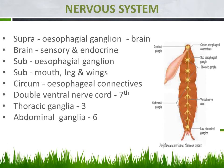Let us see the first system: the nervous system. The nervous system is controlling or coordinating the body functions. In our nervous system we have the brain, followed by the spinal cord. From the spinal cord, the nerves arise and are supplied throughout the body. The nervous system of cockroach is also simple.